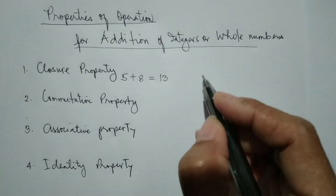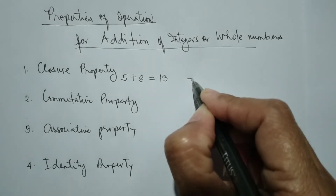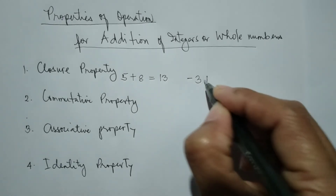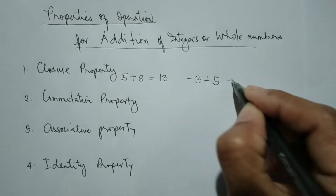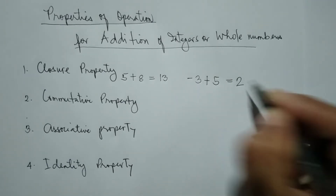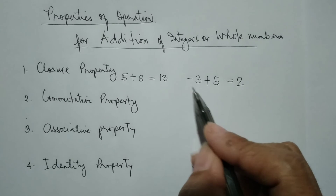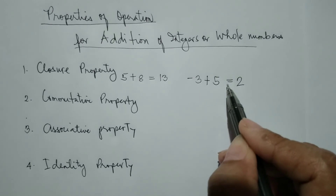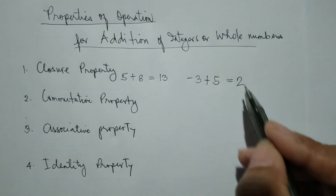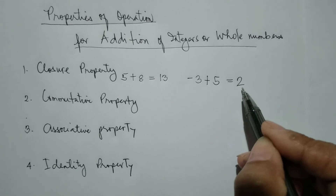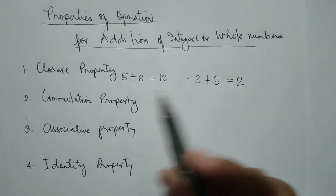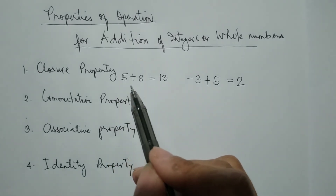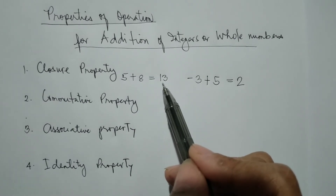Another example: negative 3 plus 5 is equal to 2. Negative 3 and 5 are both integers, and the sum of these two integers is also a whole number, which is 2. That's what we mean by closure property — two integers added together, the result is also an integer.